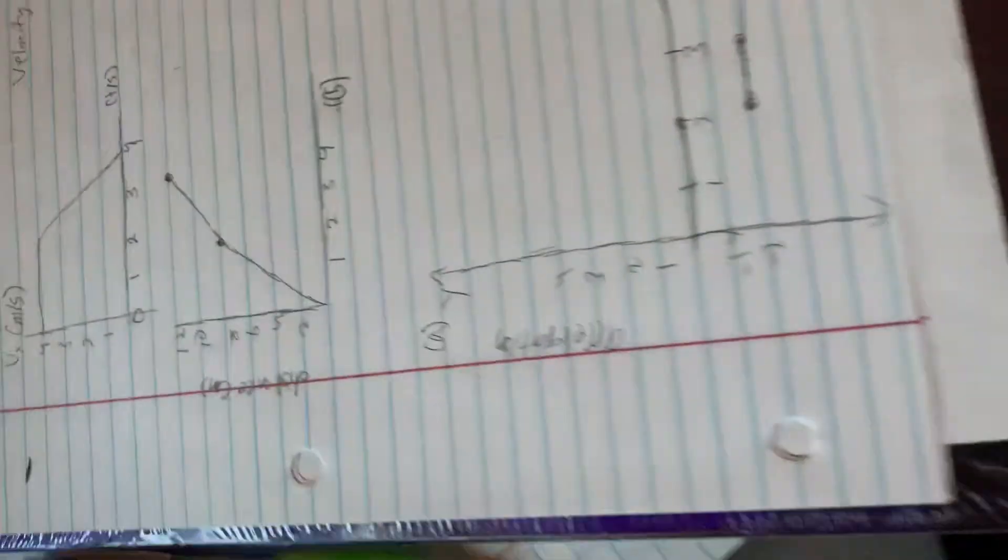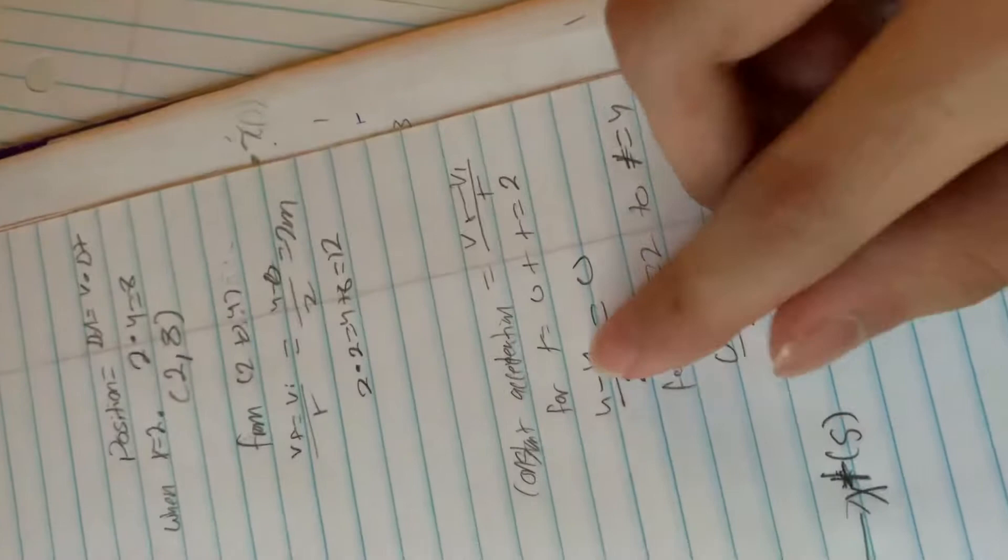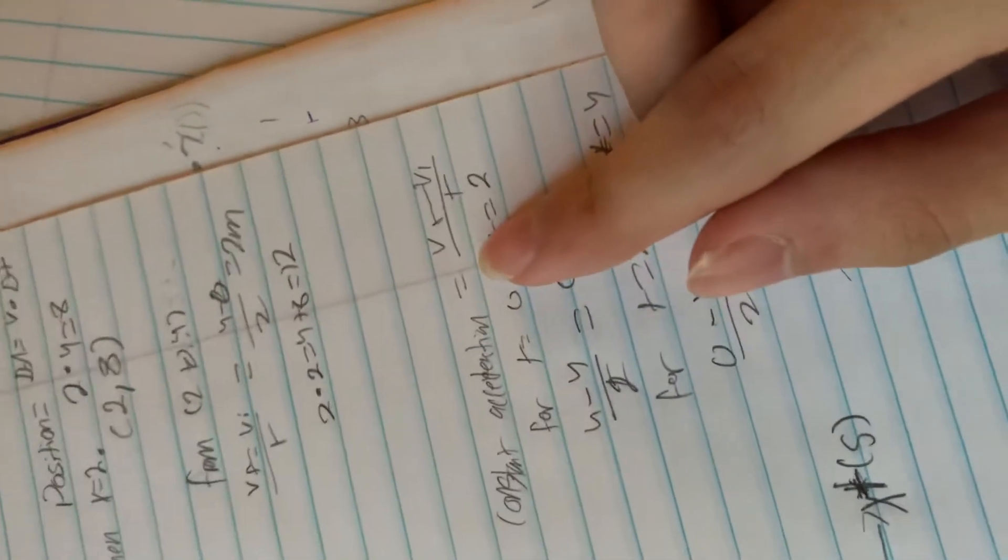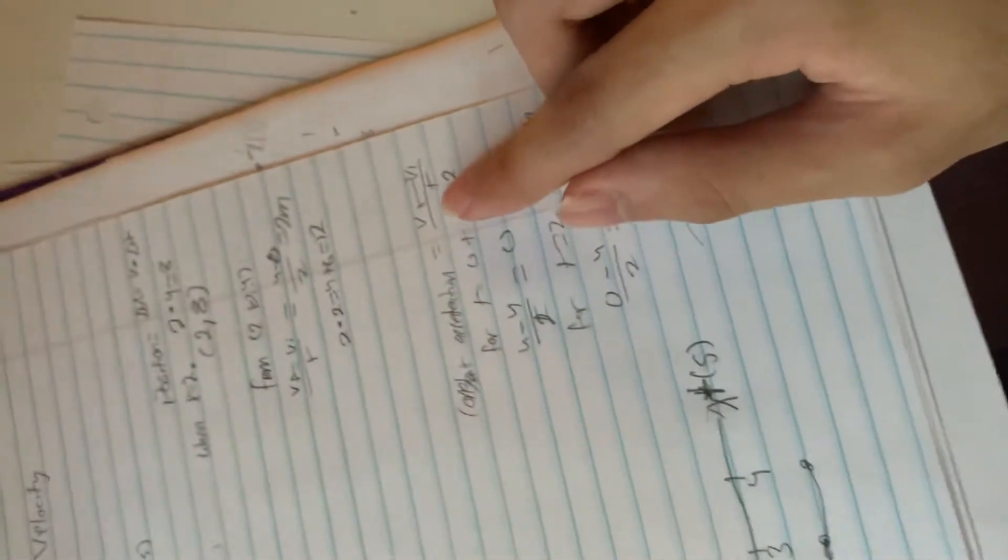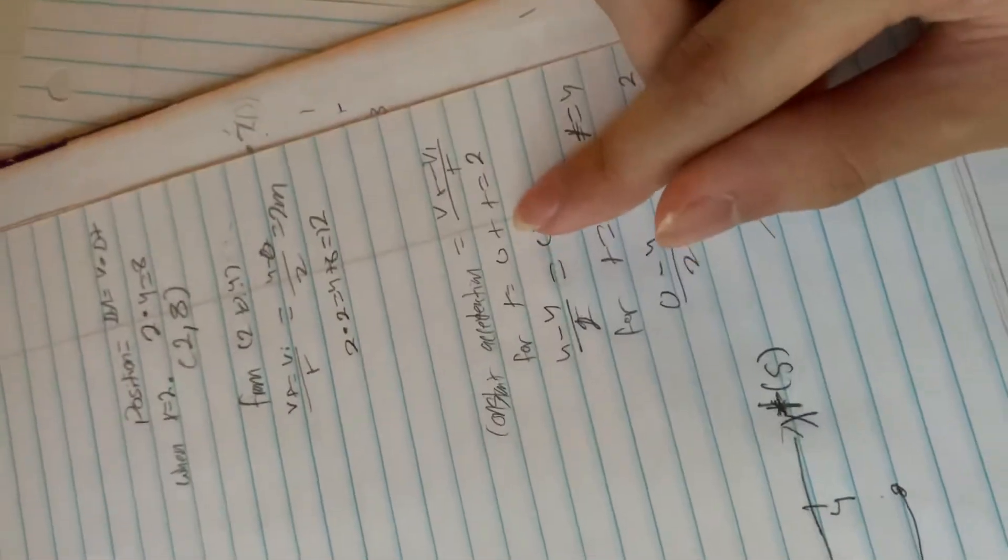Then for the acceleration versus time graph, we use the equation acceleration equals final velocity minus initial velocity over t. So from t equals 0 to t equals 2,